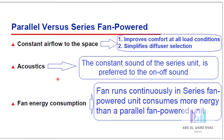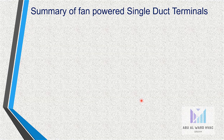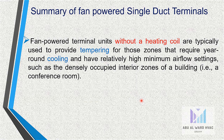The last aspect is fan energy consumption. Because the fan runs continuously whenever the space is occupied, a series fan powered unit consumes more energy than a parallel fan powered unit. The development of high efficiency motors has lessened the energy consumption differences. The fan in a series fan powered unit also costs more than an equivalent parallel fan powered unit because it generally requires a larger terminal fan. Fan powered terminal units without a heating coil are typically used to provide tempering for zones that require year-round cooling and have relatively high minimum airflow settings, such as densely occupied interior zones of a building — for example, a conference room.